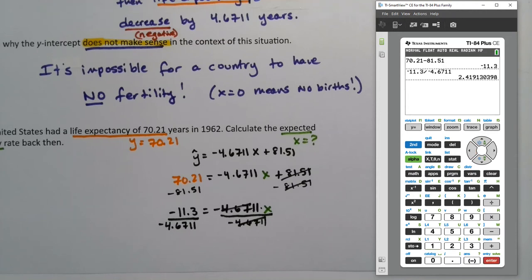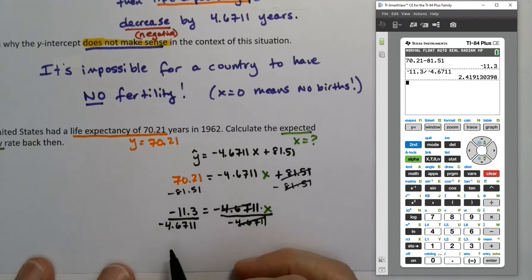You'll know if you do it wrong, by the way, because if you hit subtraction sign, it'll do this ans thing, which is not what you want. So, that's the difference between this minus sign over here, subtraction, which you don't want, and little negative sign down there next to the enter, which you do want. So we get x is 2.42, roughly. And that's what we were looking for.